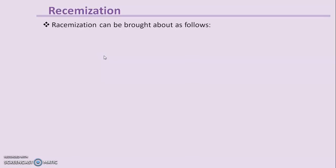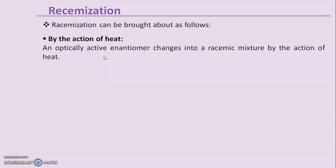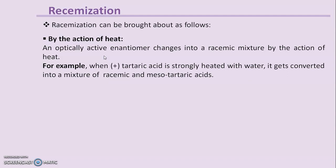Now we discuss how racemization can be brought about. There are different ways. First, by the action of heat: an optically active enantiomer changes into a racemic mixture by the action of heat. For example, when dextrotartaric acid is strongly heated with water, it gets converted into a mixture of racemic acid and mesotartaric acid.